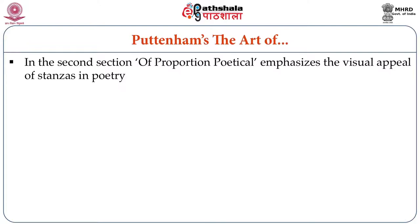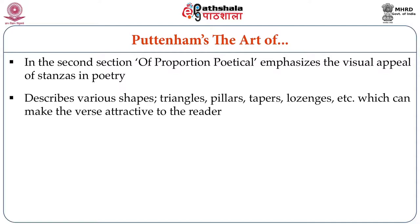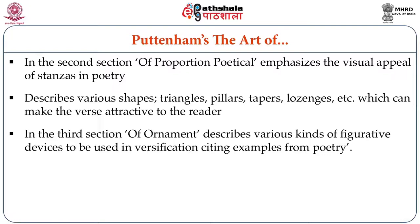Puttenham, in his second section of the book titled Of Proportion Poetical, emphasizes the visual appeal of stanzas in poetry. He describes the various shapes into which poetry can be written — triangles, pillars, tapers, or lozenges — and according to Puttenham, this would make the verse more attractive to the reader. In the third section, titled Of Ornament, Puttenham describes the various kinds of figurative devices that can be used in versification, giving various examples.